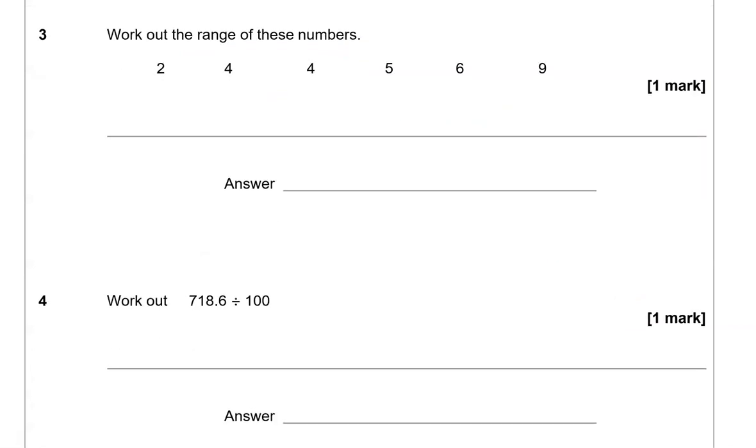Work out the range of these numbers. So the range is that difference between the biggest and the smallest number. So looking at these, the smallest is this one and the biggest is nine. So we're going to do nine, take away two, which gives us seven. So the answer is seven.